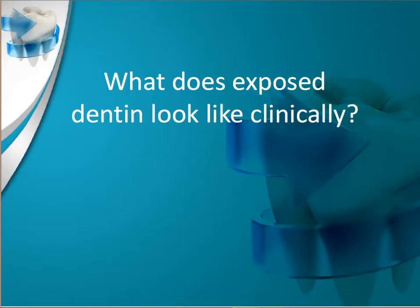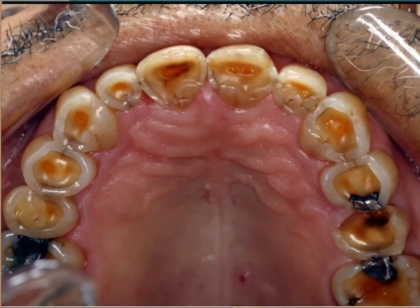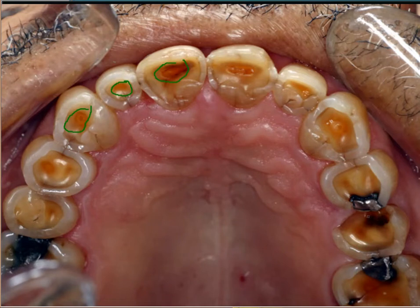Some of you may be asking yourself what exposed dentin looks like in a patient. Here is a case where the dentin is exposed — the patient has worn away their enamel through attrition. Attrition is a normal process of using your teeth over the years, but several other factors can also come into play.